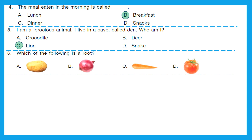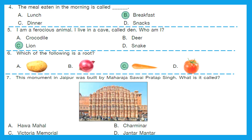Question 6: Which of the following is a root? Is it potato, onion, carrot or tomato? The right answer is option C, carrot. Question 7: This monument in Jaipur was built by Maharaja Sawai Pratap Singh. What is it called? Is it Hawa Mahal, Charminar, Victoria Memorial or Jantar Mantar? The right answer is option A, Hawa Mahal.